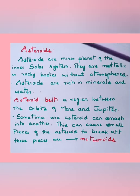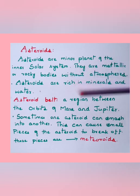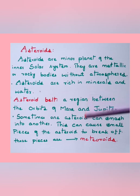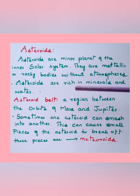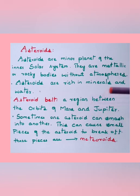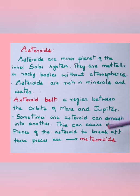Asteroids are minor planets of the inner solar system — metallic or rocky bodies without atmospheres. They are rich in minerals and water. A large number of asteroids are found between the orbits of Mars and Jupiter — this region is called the asteroid belt. When asteroids smash into one another, they break into small pieces called meteoroids. When meteoroids fall toward earth, they catch fire due to friction with the atmosphere — we call them shooting stars. Sometimes they reach the earth and create craters.